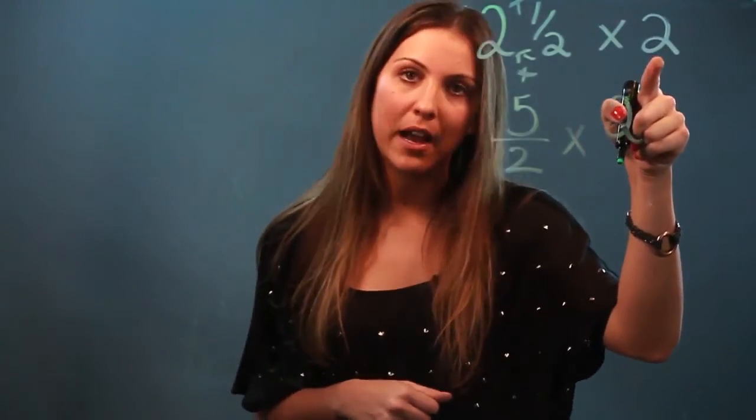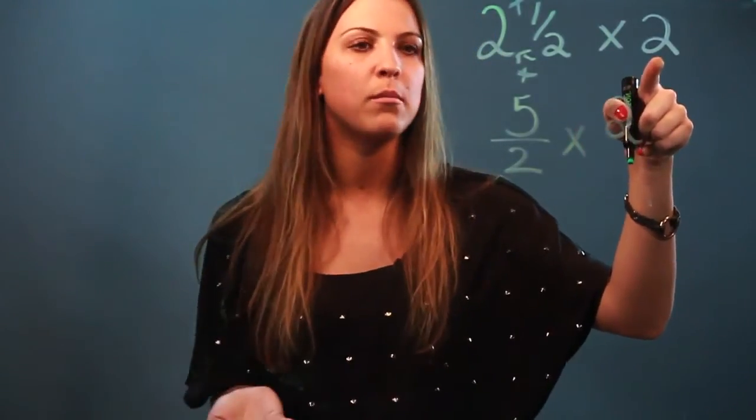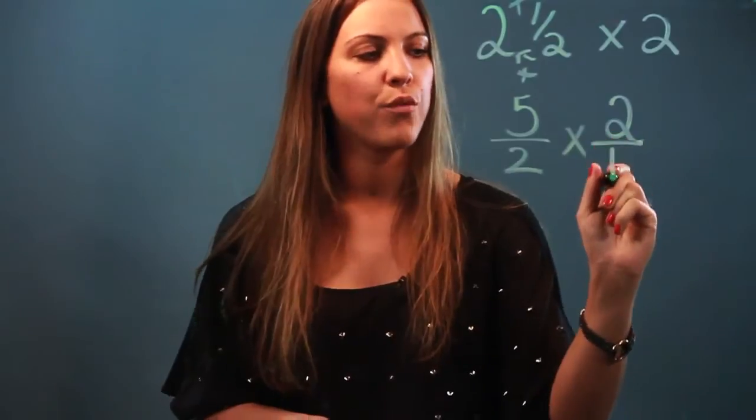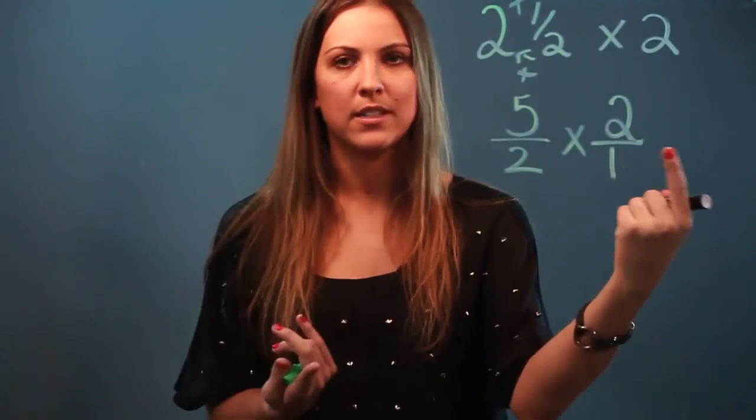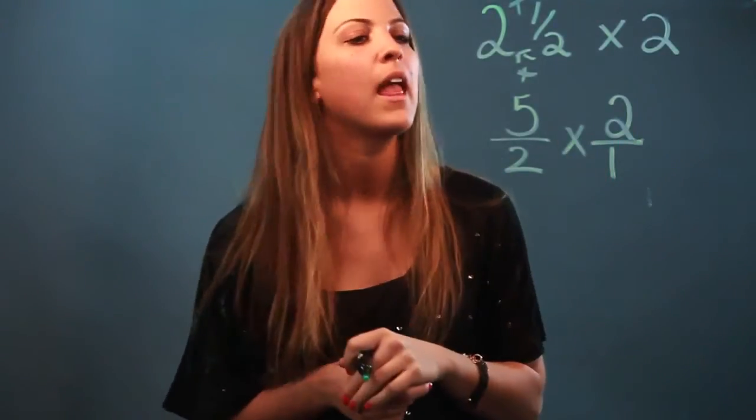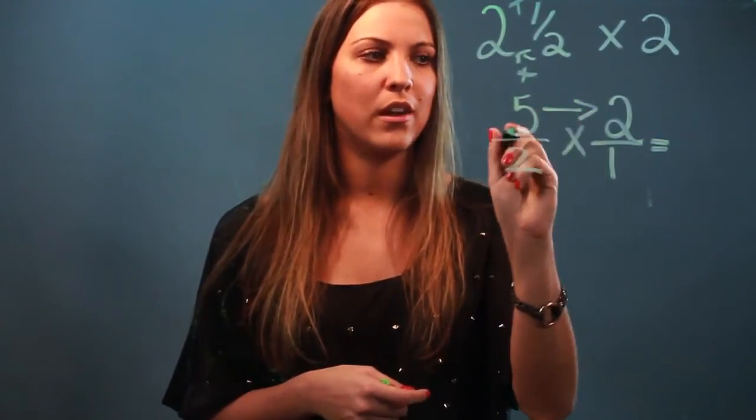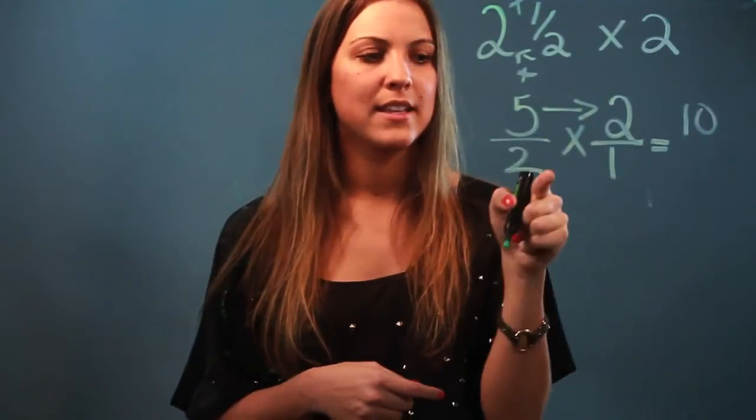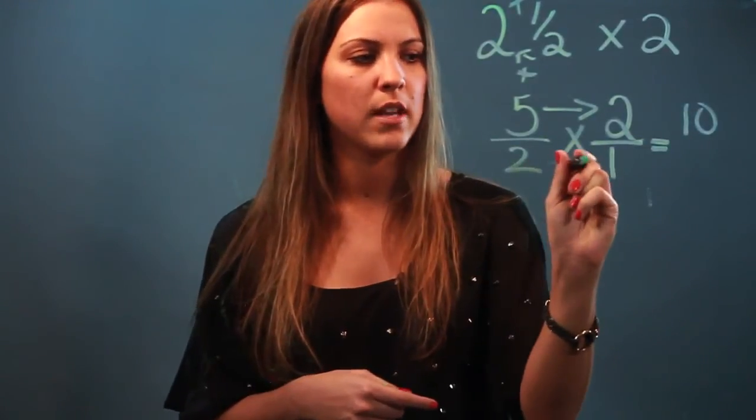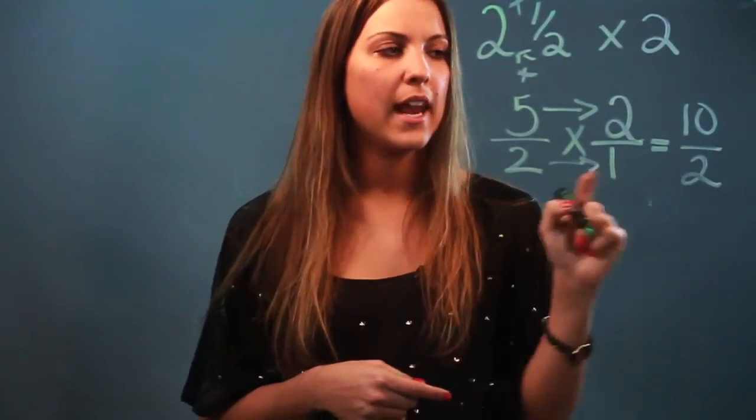Now I want to write two as a fraction. So the easiest way to write a whole number as a fraction is just write it over the number one, because two divided by one is still just two. So I didn't change anything. And now to multiply fractions, all I do is multiply straight across. Numerator times numerator, five times two is ten. Denominator times denominator, two times one is two. And I get ten over two.